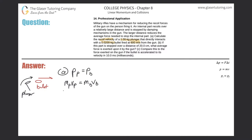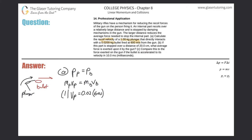The mass of the plunger is one kilogram. The velocity of the plunger is what we're solving for. The mass of the bullet is 0.02 kilograms, and the velocity of the bullet is 600 meters per second. One times the velocity of the plunger equals the velocity of the plunger, so we just take 0.02 times 600 and get a value of 12 meters per second. That's the recoil velocity. Letter A is done.